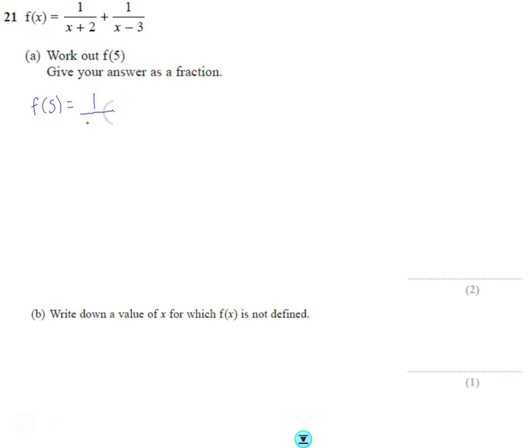So the first fraction is going to be 1 over 5 plus 2. The second fraction is going to be 1 over 5 minus 3, which is 1 over 7 plus 1 over 2.